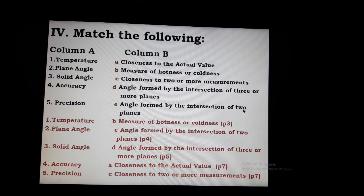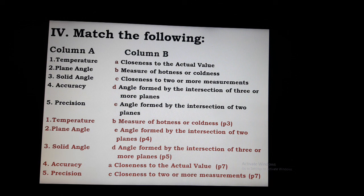Match the column: Column A to Column B. Temperature — measure of hotness or coldness. Plane angle — angle formed by the intersection of two lines or planes. Solid angle — angle formed by the intersection of three or more planes. Accuracy — closeness to the actual value. Precision — closeness of two or more measurements to each other.